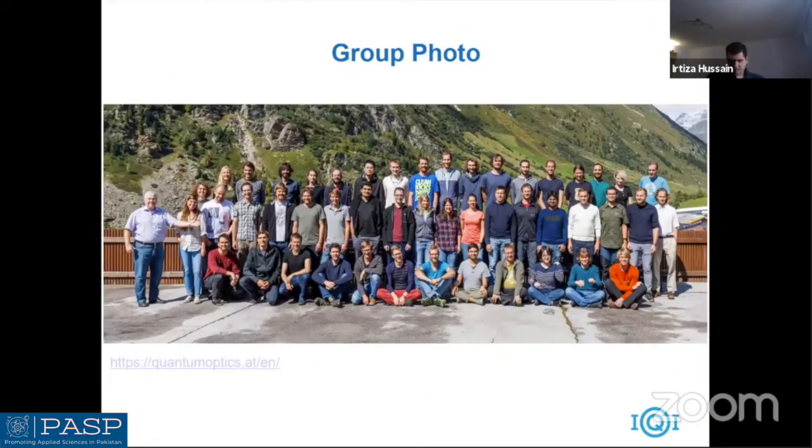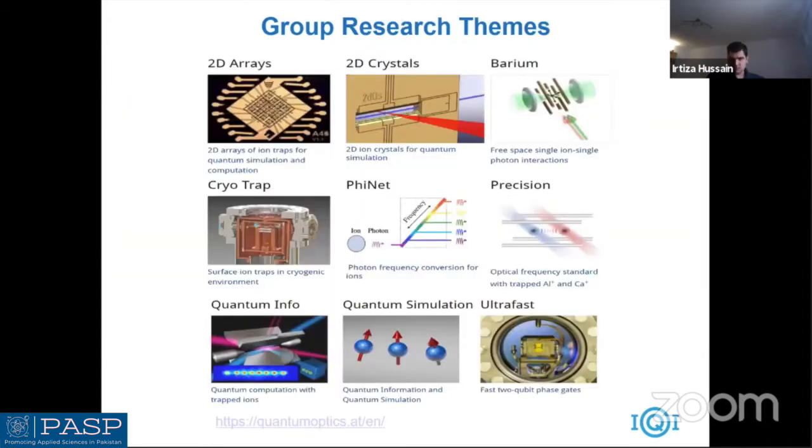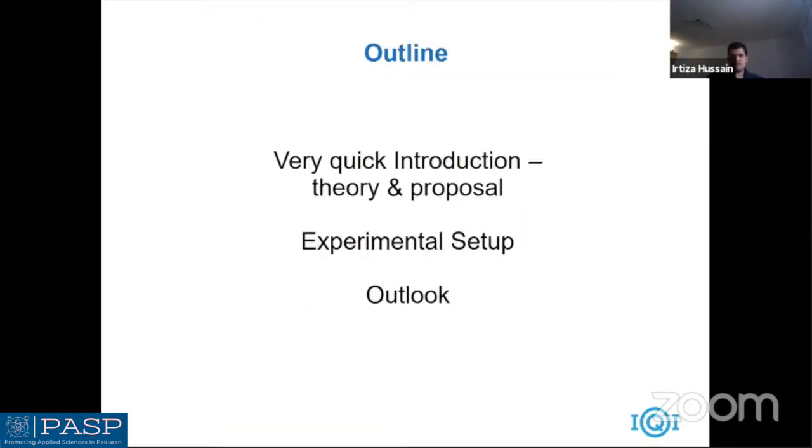Actually what I'm focusing on is how we can develop tools for increasing entangling gate operations in calcium atomic ions. I'm working in Austrian Academy of Sciences in Austria. This is our group photo. We have over 50 people working under Professor Reiner Blatt. The group research teams are related basically mostly on quantum innovation, quantum computation, quantum optics, and quantum networking. I'll give you a very quick introduction because time is short and then I'll go through the proposal and some experimental advances and outlook.